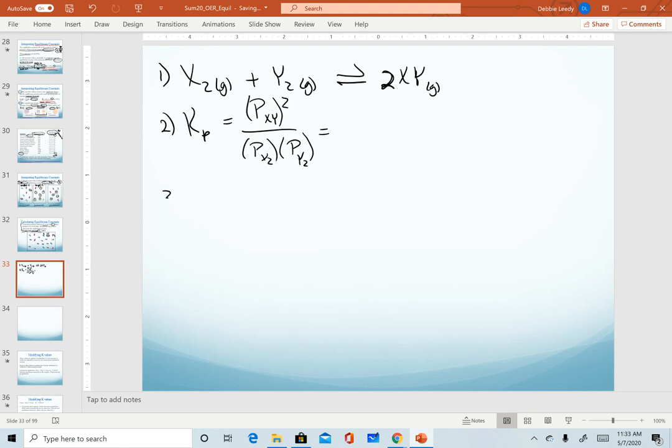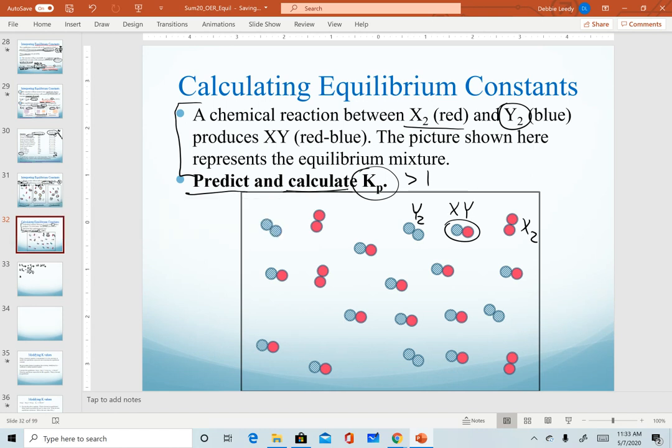Our second step then is to write our equilibrium expression for this. And then our third step would be to plug in quantities. So I'm going to go back to this slide. So I need to count each one. xy is our product on top. So for xy, I have 12.